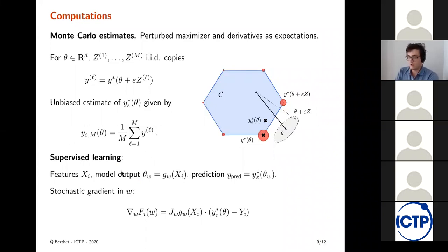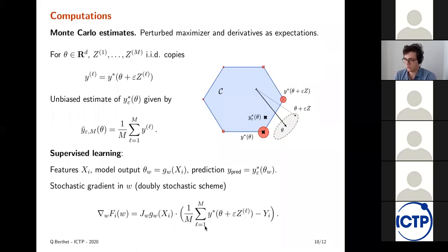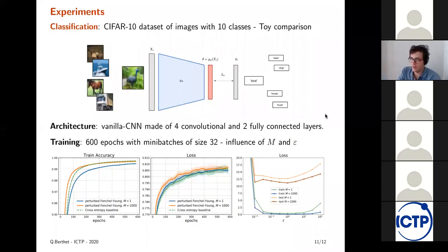So what we do in our supervised learning setting, we have features XI. We have model outputs. This allows us to have a stochastic gradient in the weights of the model. The only part here that's not explicit is something that we generate through expectation and we get a double stochastic scheme. And so very quickly, we apply this to two experiments. So the first one is just to check that we're proposing a softmax generalization. We're doing as well as the softmax at least. And so we show that we're competitive with the softmax in the classification test on CIFAR 10. We investigate a little bit the influence of M, the number of samples and epsilon, the amount of noise added. I'm happy to talk about this offline.